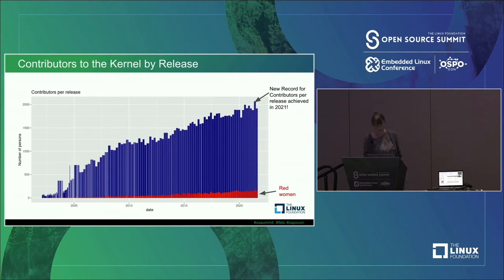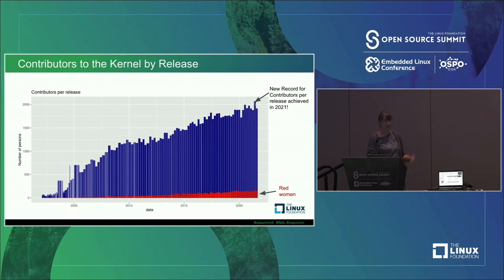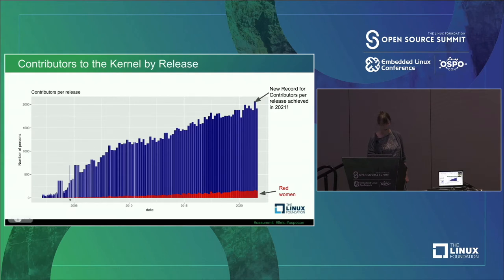Looking at this by release, what's been happening in the last year: in one recent release we saw a record number of contributors, and there were articles in LWN and other places about that analysis. Linus has also commented on it. So we got curious about what's been happening across the space, and particularly what's been happening to women — what's been happening to diversity? You can see this line at the bottom represents women, and it's been very slowly growing.